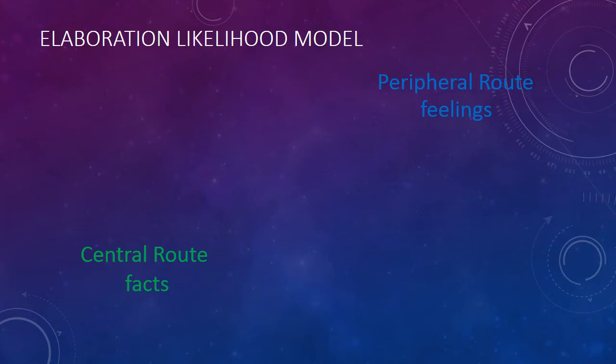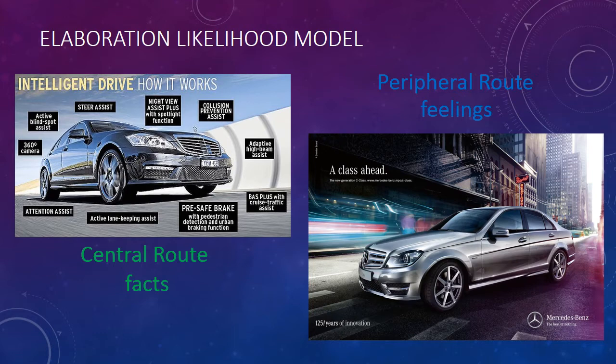Here's an example of the central route and the peripheral route in an ad. You can see the central route ad is giving a lot of facts about this Mercedes-Benz — concrete things to think about regarding why you might want to purchase one. If you contrast that with a peripheral route ad, it's just a cool-looking ad that makes you think the Mercedes-Benz is kind of cool. There are no facts, but you are having positive feelings towards it.